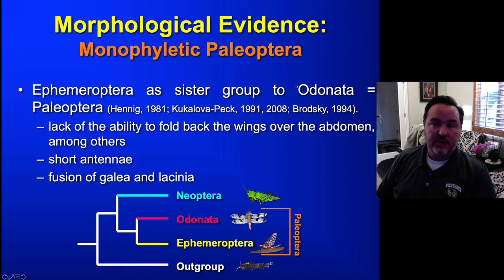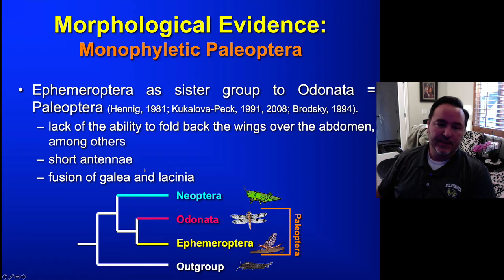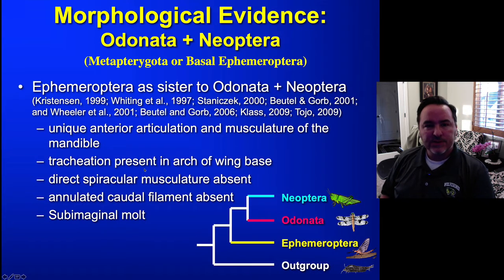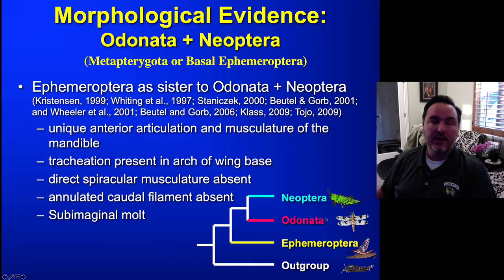There is evidence that Ephemeroptera and Odonata should be grouped together in a group called the Palaeoptera, this 'old wing' notation. Therefore you have Neoptera being sister to the Palaeoptera, and these are some of the studies that support this relationship. There is also morphological evidence to support the idea of Ephemeroptera as sister to Neoptera plus Odonata — sometimes called the basal Ephemeroptera hypothesis, or Metapterygota, since Neoptera plus Odonata plus Ephemeroptera carries that name. Here are some of the morphological characteristics that support that arrangement.